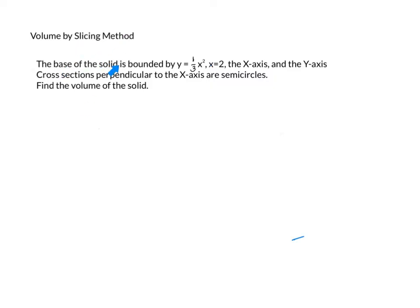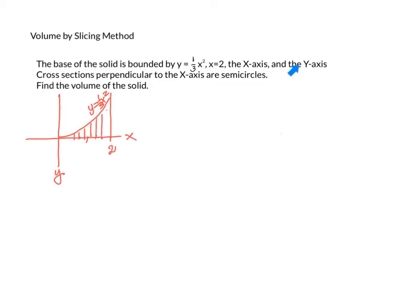Suppose we have the base of a solid bounded by y equals 1/3 x squared, x equals 2, the x-axis, and the y-axis. So the base of the solid is bounded by the x-axis, the y-axis, and y equals 1/3 x squared. This is y equals 1/3 x squared and x equals 2, which is a vertical line. Let's shade in the base of the solid.